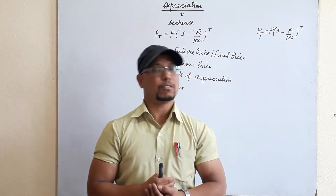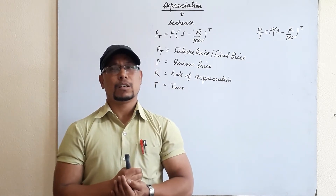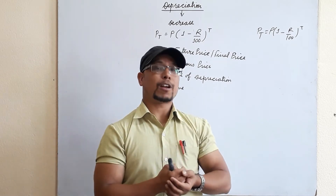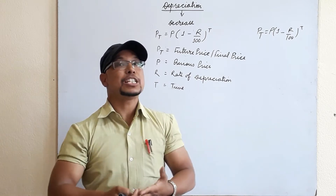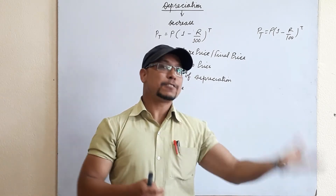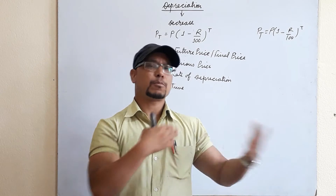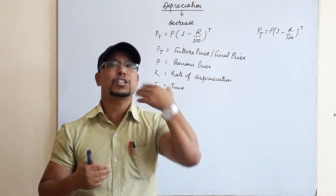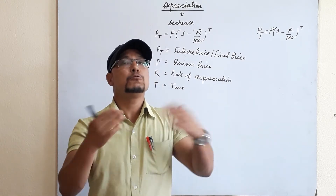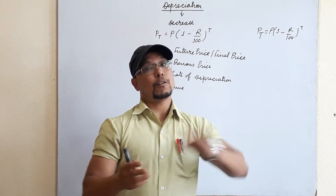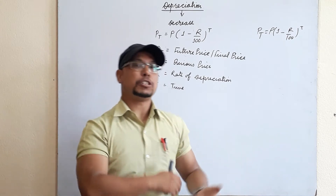Let's give an example. Suppose I bought a mobile for Rs 50,000 in 2075. If I wanted to sell it after one year, the price would not be the same — it would be less than 50,000, let's say 40,000. If I used it for two years, the price would be even less than 40,000. Over time, the price keeps decreasing — that is why it is called compound depreciation.